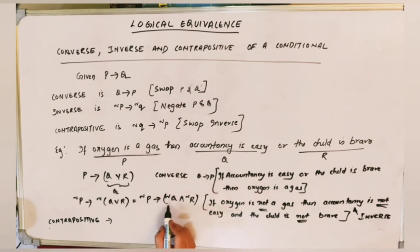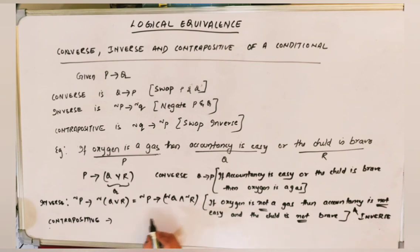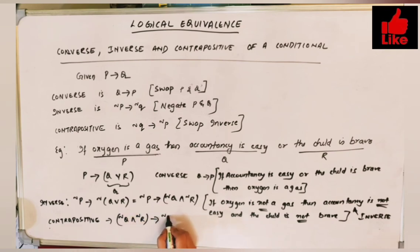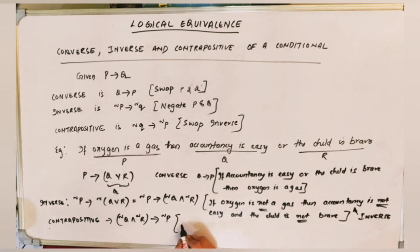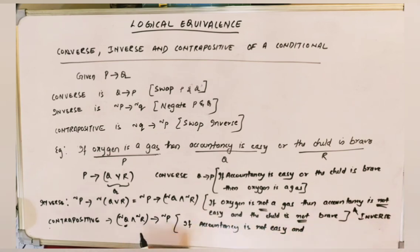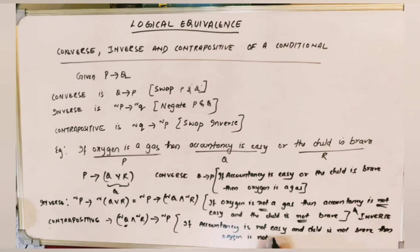Contrapositive is the reverse of inverse. Inverse was NOT P conditional (NOT Q AND NOT R), so contrapositive is (NOT Q AND NOT R) conditional NOT P — 'If accountancy is not easy and the child is not brave, then oxygen is not a gas.'